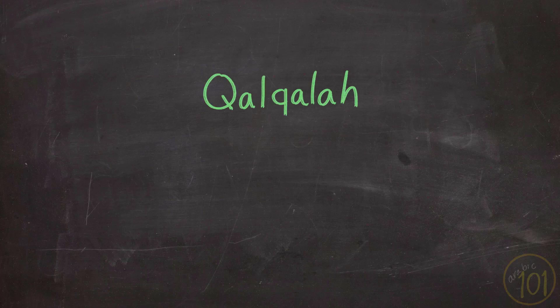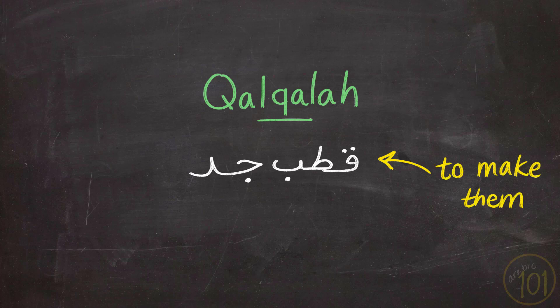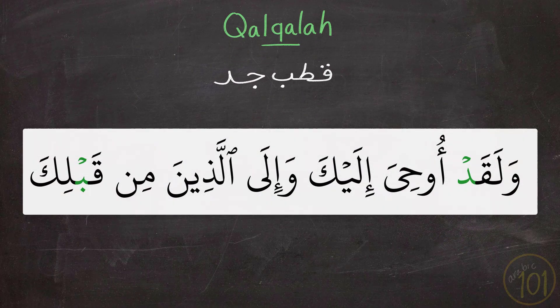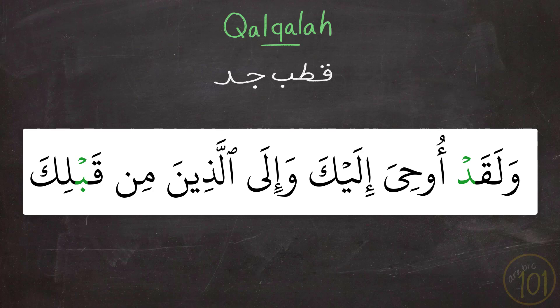The letters of qalqala are five and they form the mnemonic 'qutb jadd.' The purpose of qalqala is making the sound of these five letters audible and distinguishable when they have sukoon. When applying qalqala properly, it would be possible to easily distinguish the dal from the ba, and without it these two sounds would be very similar. That was the main purpose why Arabs had this technique in the first place.